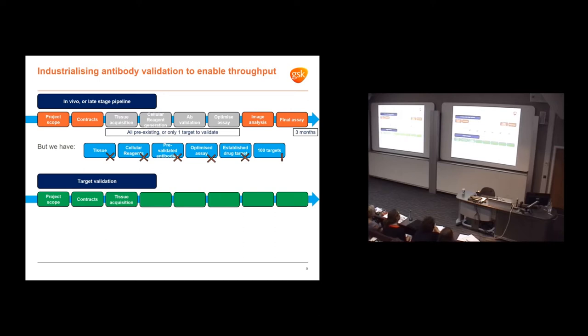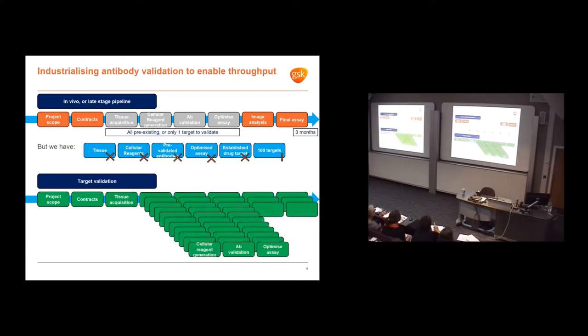These things at the start don't change much - same project scope, contracts, tissue acquisition. But now we've got to do cellular reagent generation, antibody validation, and assay optimization at huge scale in the same time frame. The only way we can do this is to get an efficient pipeline, industrialize this process, and at the moment we're brute forcing it. If you can come up with any ideas of how we can make that more efficient, I'd be happy to hear them.